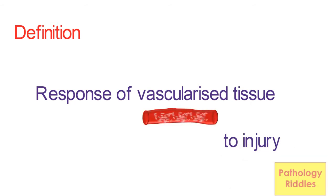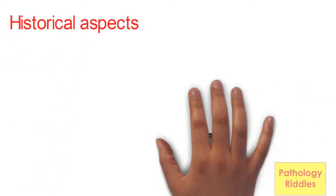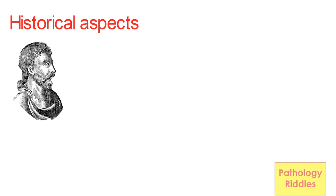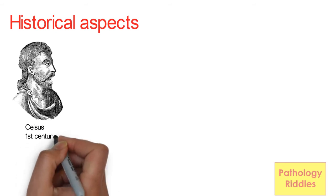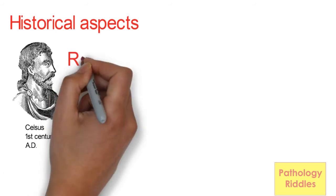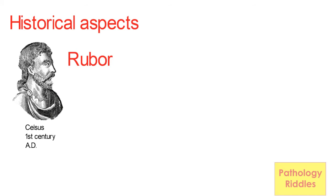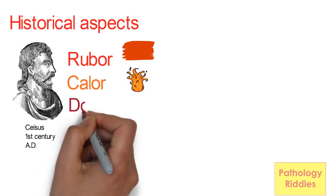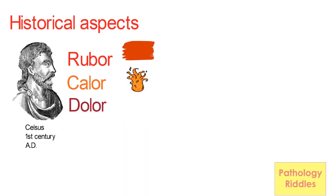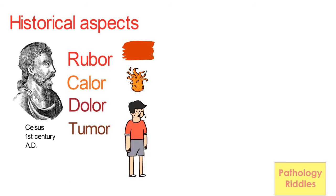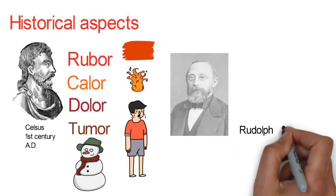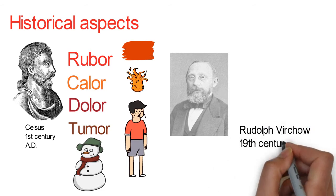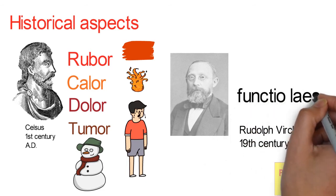It is important to know a few historical aspects of inflammation. Celsus, a Roman writer of the 1st century AD, listed four cardinal signs of inflammation. They are Rubor which means redness, Calor which means heat, Dolor which means pain, and Tumor which means swelling.